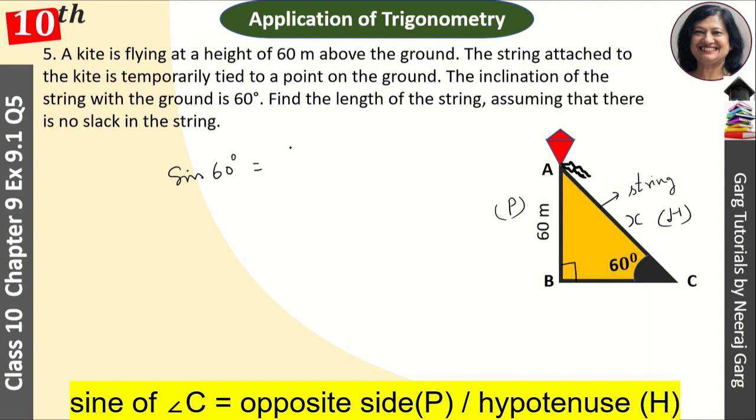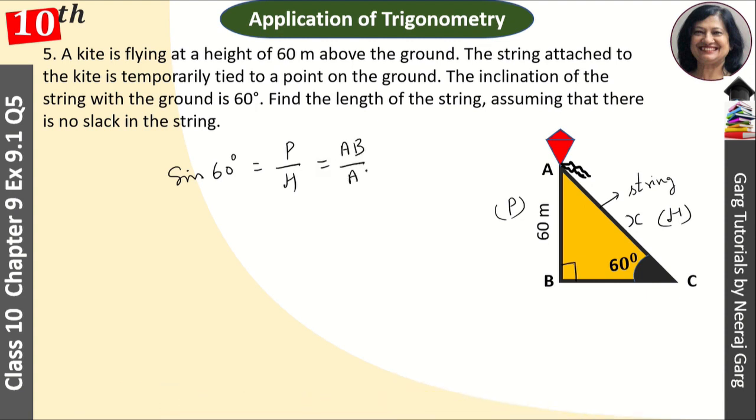That is opposite side, meaning perpendicular upon hypotenuse. And what is the perpendicular? AB upon AC. What is the value of sin 60 degrees? The value is root 3 upon 2.